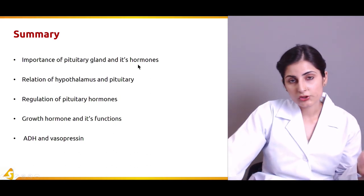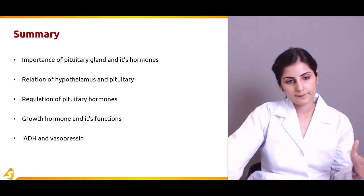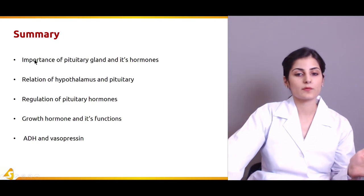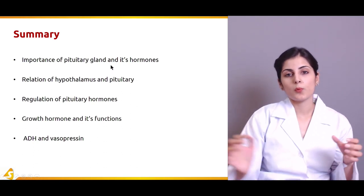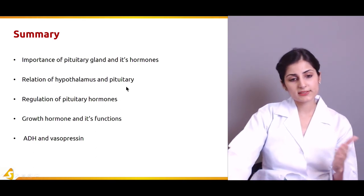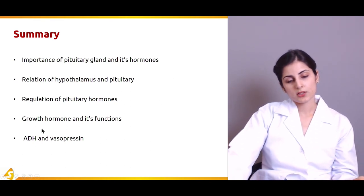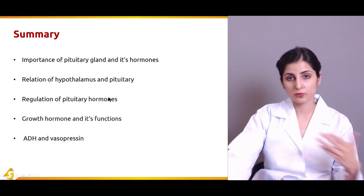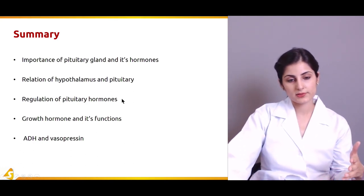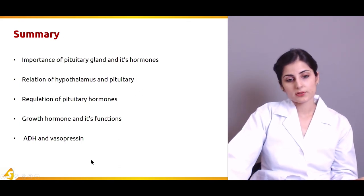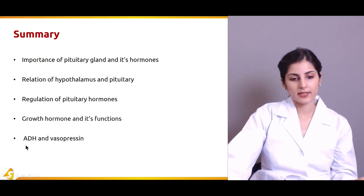Today we discussed the importance of the pituitary gland — why it is called the master gland of the body — and studied the hormones produced by its different lobes. We studied the relation between the hypothalamus and the pituitary and how these two structures coordinate with each other. We studied the regulation of growth hormone, oxytocin, and ADH. Growth hormone was studied in detail — its functions and abnormalities were discussed — and finally we studied the hormones of the posterior pituitary gland: ADH and vasopressin.